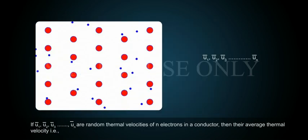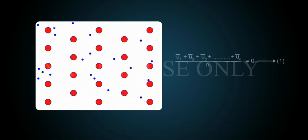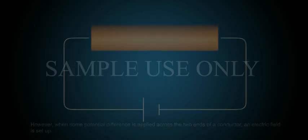If U1 bar, U2 bar, U3 bar, and so on, Un bar, are random thermal velocities of n electrons in a conductor, then their average thermal velocity, that is, U1 bar plus U2 bar plus U3 bar plus so on plus Un bar by n equals to zero. Equation 1.